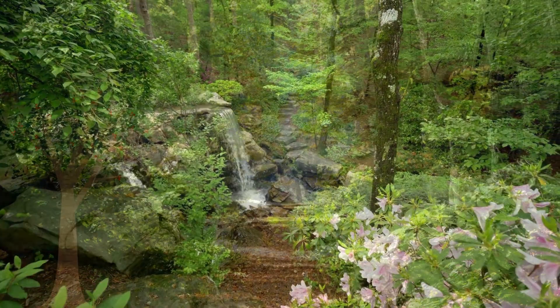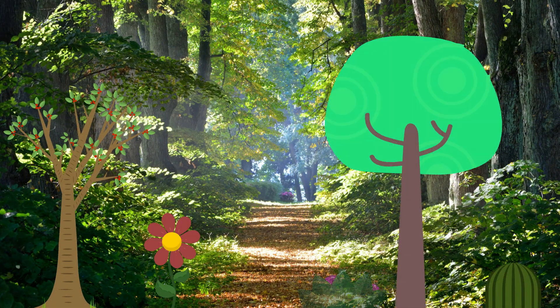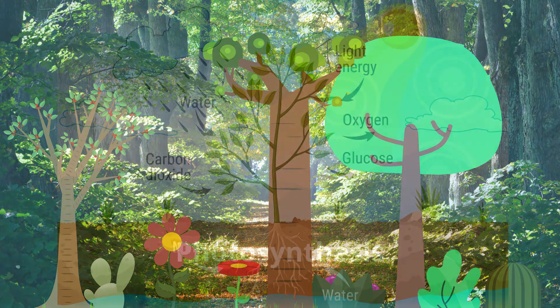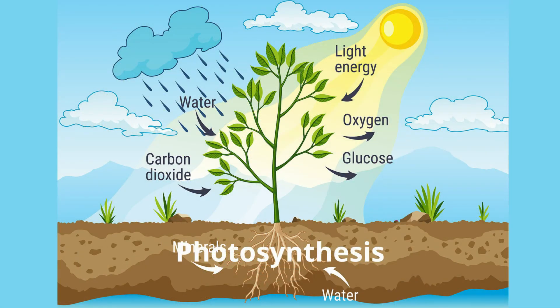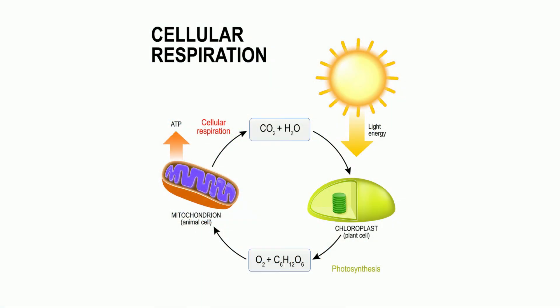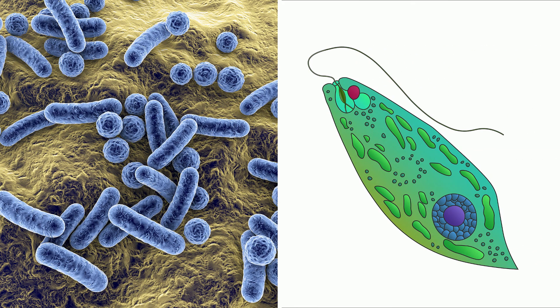The most common autotrophs are plants. Plants take sunlight along with water and carbon dioxide to produce glucose in a process called photosynthesis. The glucose is then used as energy. Bacteria and some protists also use photosynthesis to produce glucose.